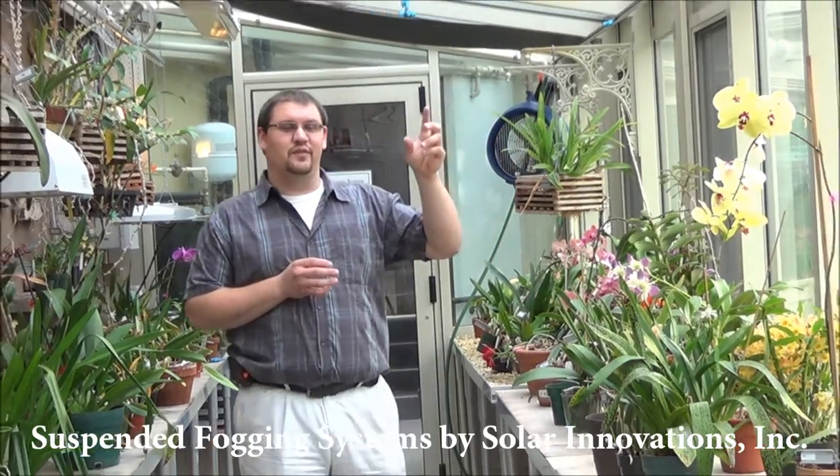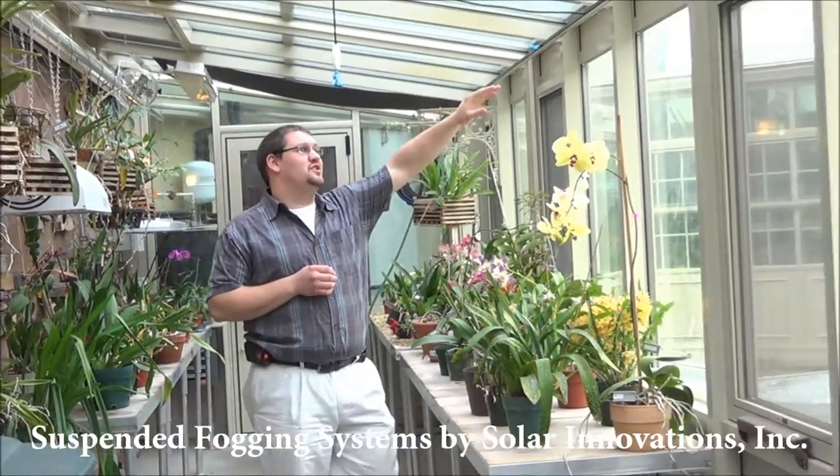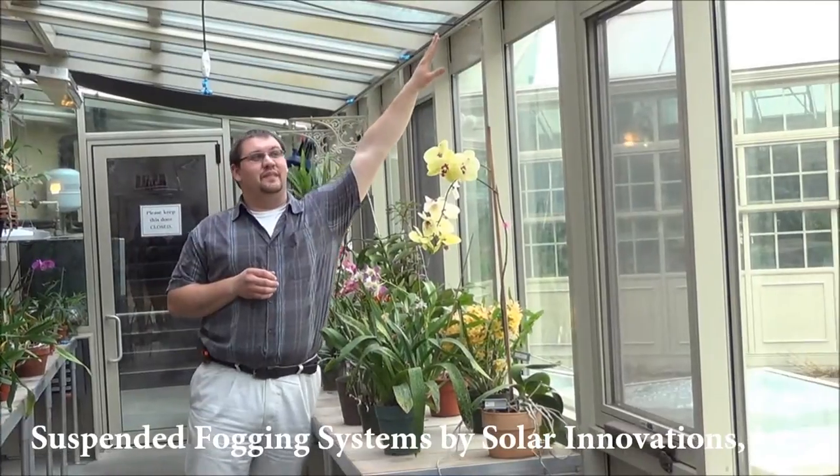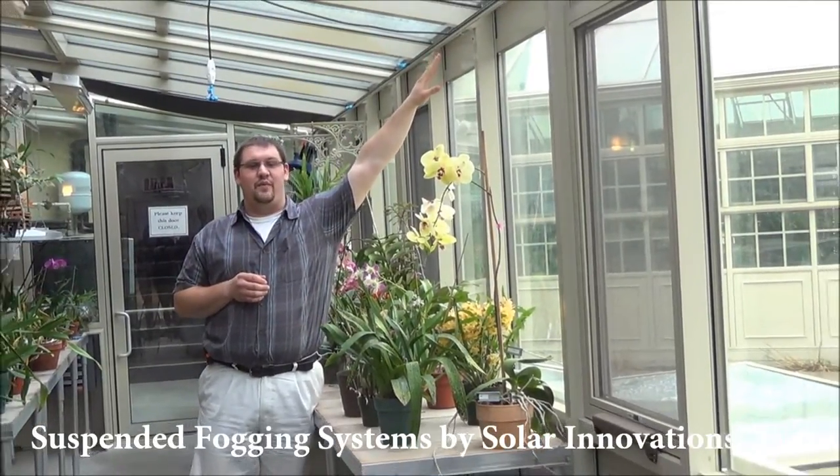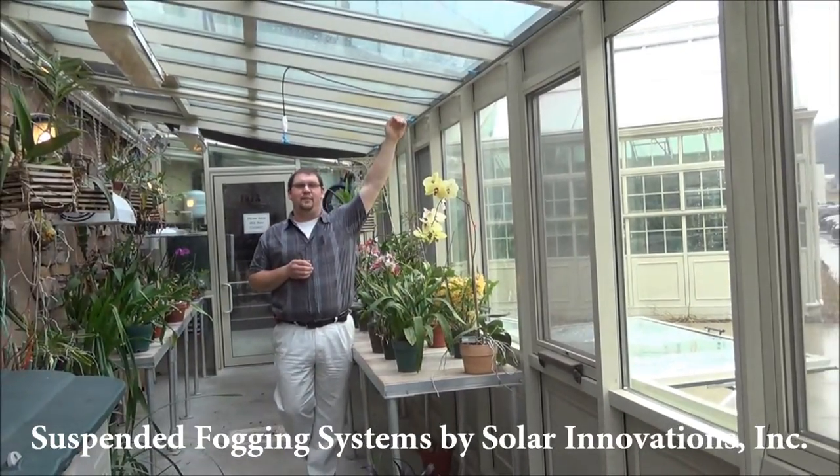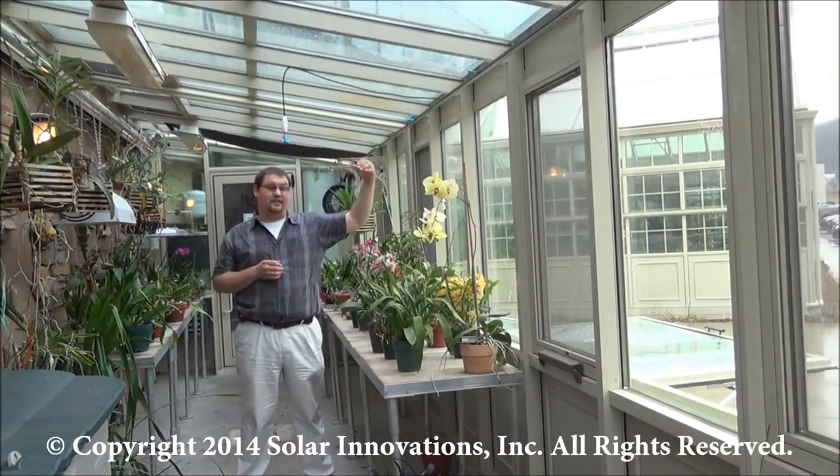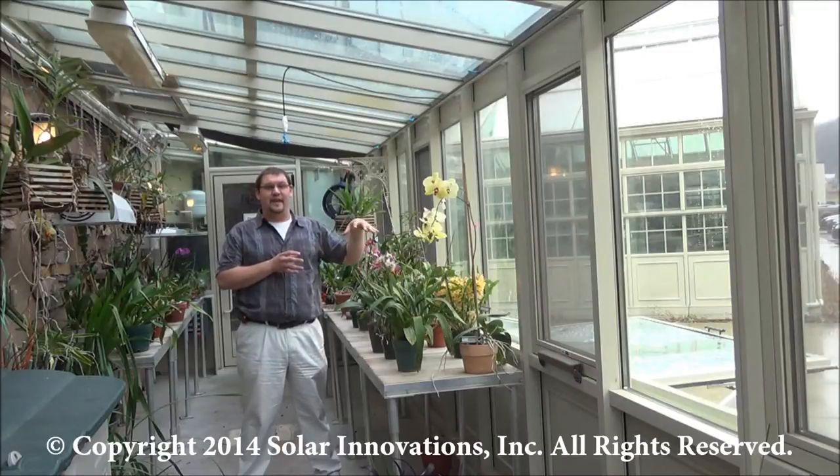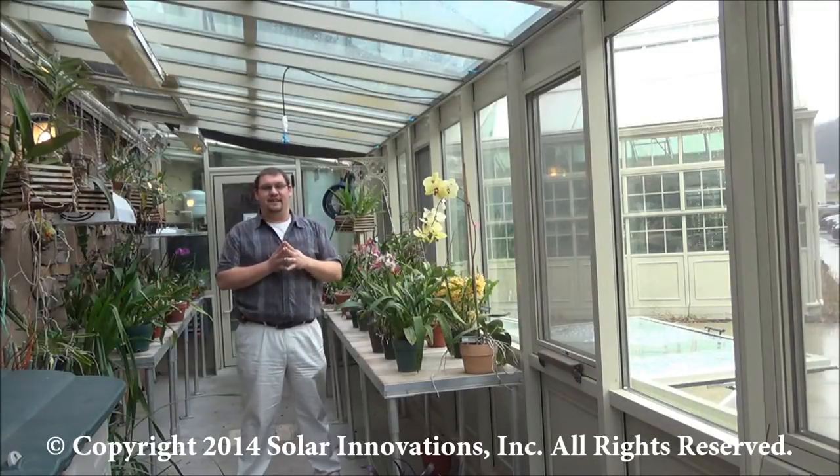If you look off to your right, you'll see we're showing an eave-mounted system. This would simulate a system that would have possibly shades above or maybe not, depending upon the height at which you're looking to fog, the plants you're growing, and what relative humidity levels you need to maintain in the greenhouse.